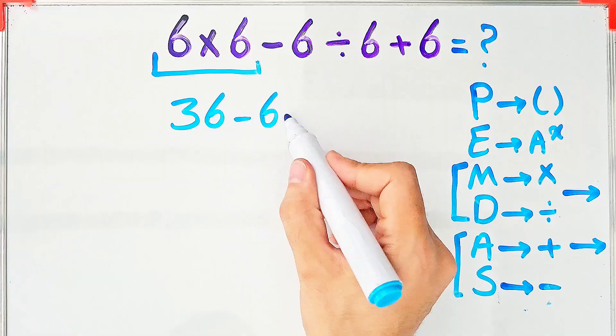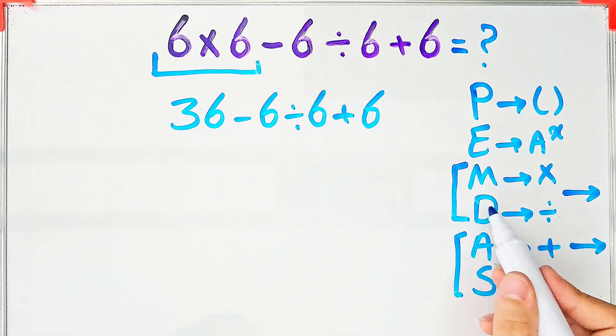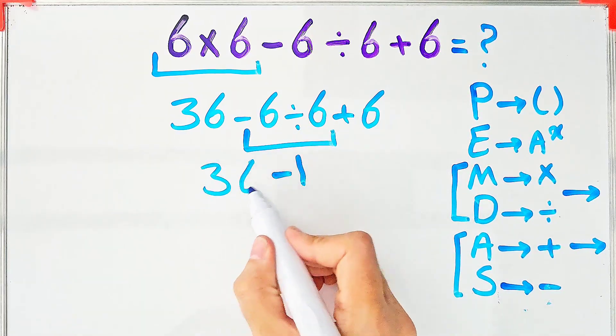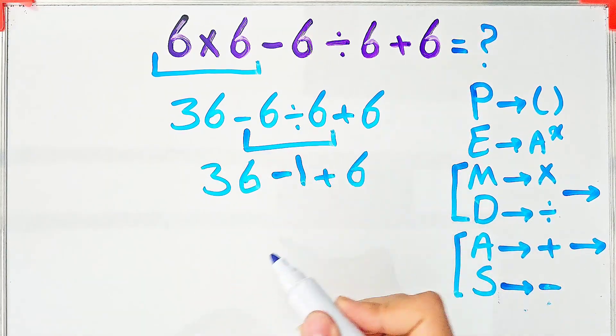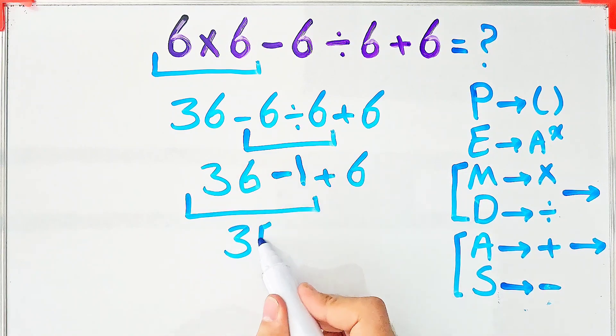Now we have 36 minus 6 divided by 6 plus 6. In this step we do the division: negative 6 divided by 6 equals negative 1. 36 minus 1 then plus 6. 36 minus 1 equals 35.